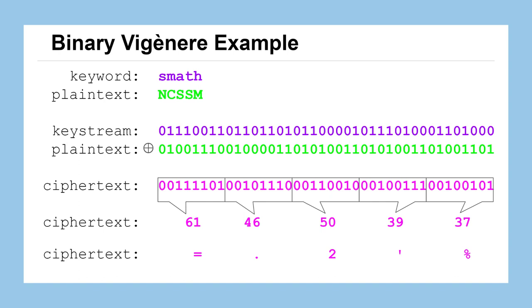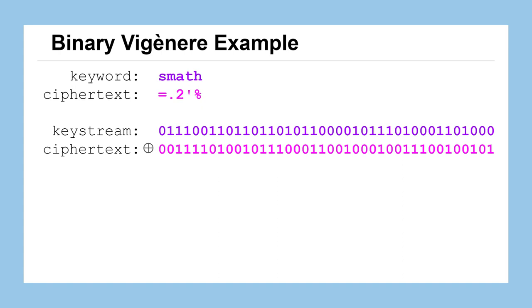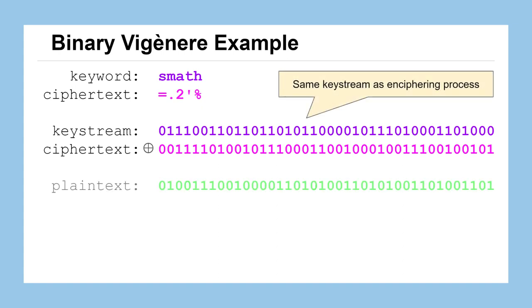One benefit of the XOR operation — part of the reason stream ciphers use it — is that it's very easy to reverse. Keeping the same keyword SMATH but now using our ciphertext, we convert each character to its binary representation. XORing the key stream onto the ciphertext again recovers the plain text. To undo an XOR with a key stream, you simply XOR by the same key stream again.